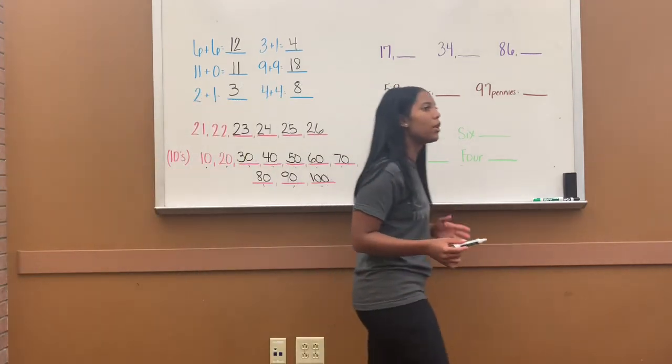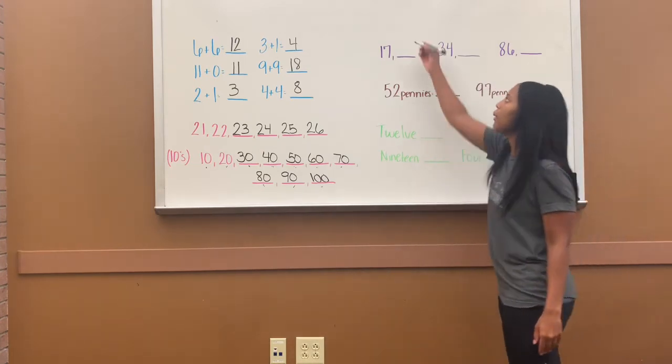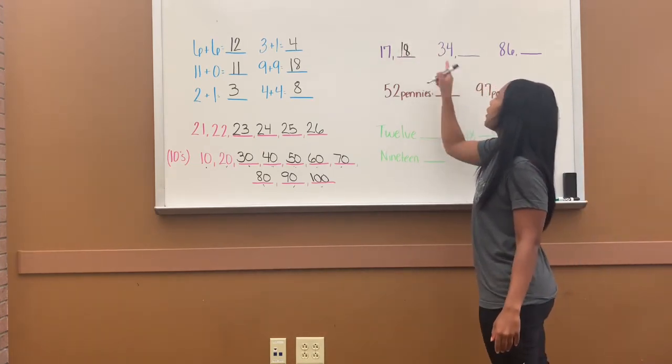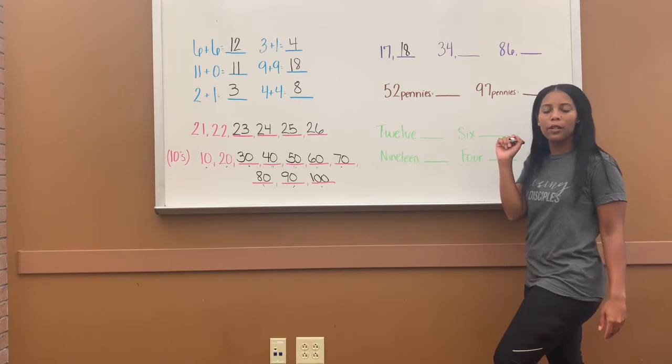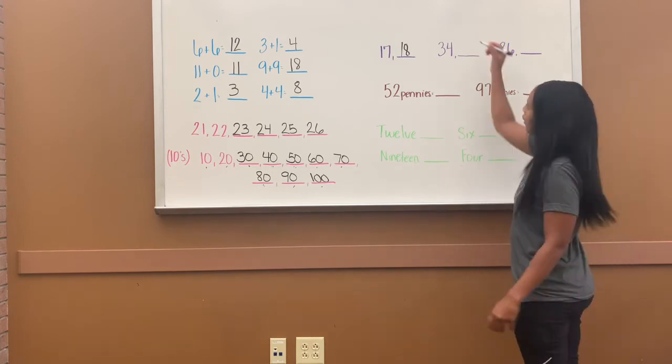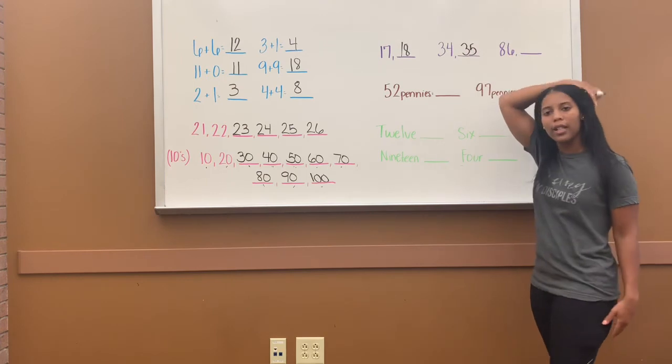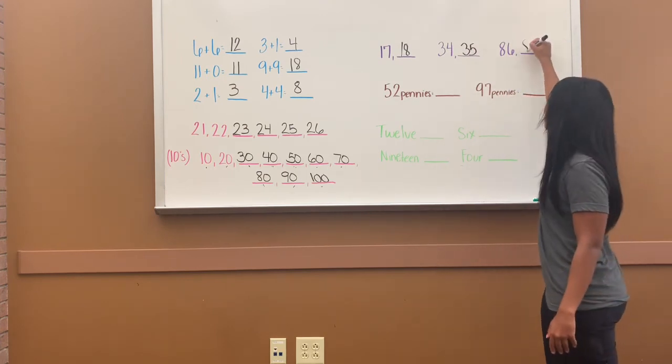All right, we have 17. What number is one more than 17? 18. 34. What's one more than 34? 35, and then 86. One more than 86? 87.